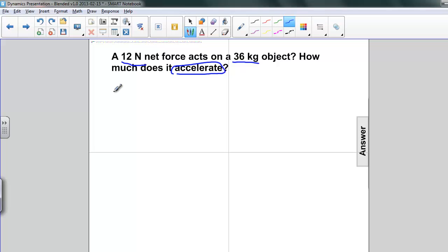So let's look at our known quantities. Our known quantities are the net force, which is 12 Newtons, equals the mass, which is 36 kilograms. And we seek to find the acceleration.